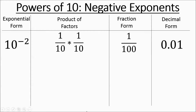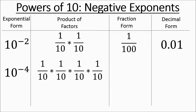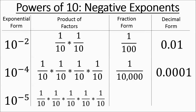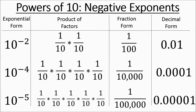Wasn't 10 to the 2 equal to 100? Basically, any time you have a negative exponent and you're making it into a fraction, you just put 1 as the numerator and work it out normally for the denominator. So 10 to the negative 4, written as a product of factors, is 1 tenth multiplied by itself 4 times. As a decimal that's the ten-thousandths place, or 1 over 10,000 — 1 with 4 zeros. 10 to the negative 5: you'd write out five one-tenths multiplied together, giving you the hundred-thousandths place, or 1 over 100,000 — 1 with 5 zeros.